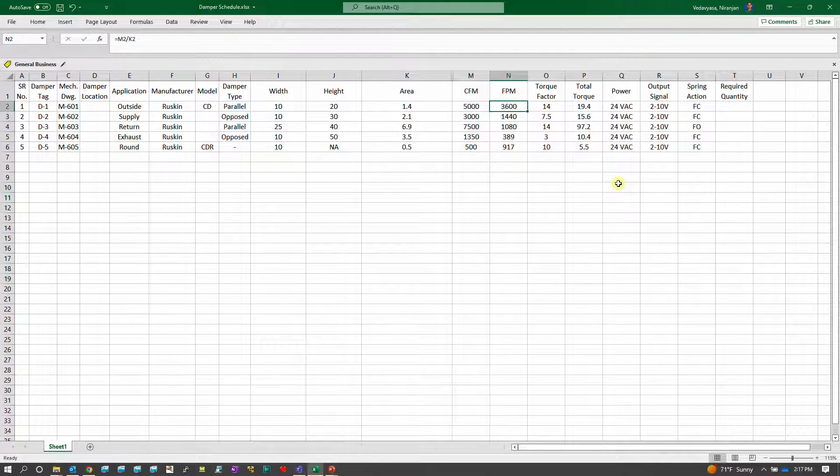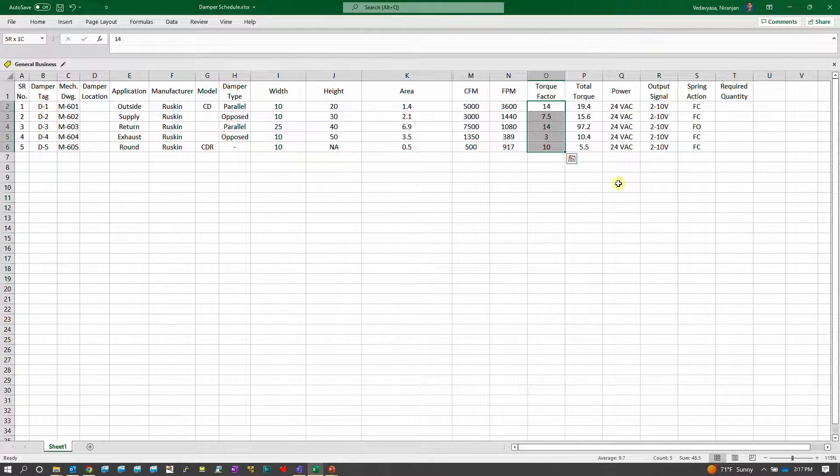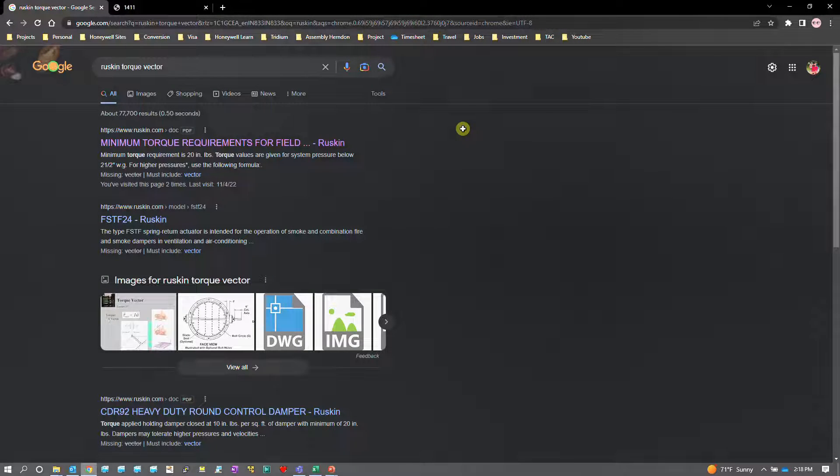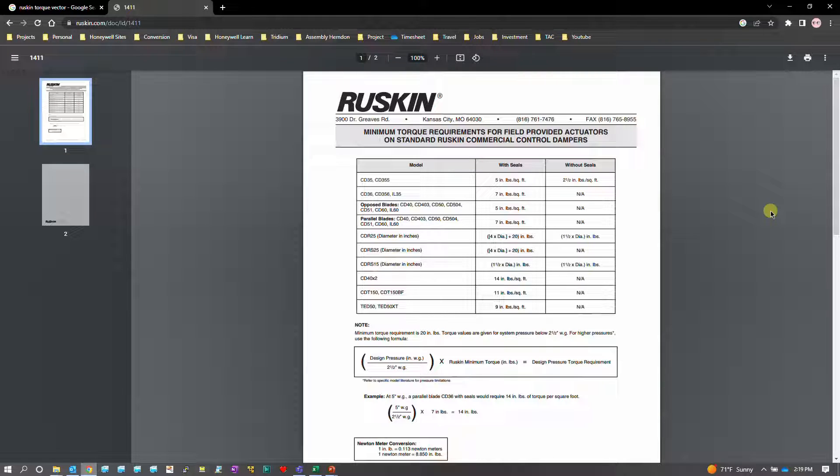The next thing we want to do is see what the torque factor for this particular dimension and the flow which is calculated. Where will you get this torque factor? The torque factor you'll get it in any manufacturer's website. If you go to Google and say Ruskin torque factor, it will prompt you with their own particular torque factors.